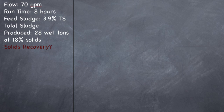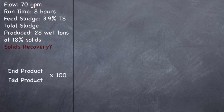Percent efficiency for a belt press is the end product divided by the fed product times 100. So we need to find out how many total pounds we fed, and then how many total pounds we got out of it. Let's go ahead and start by doing that.